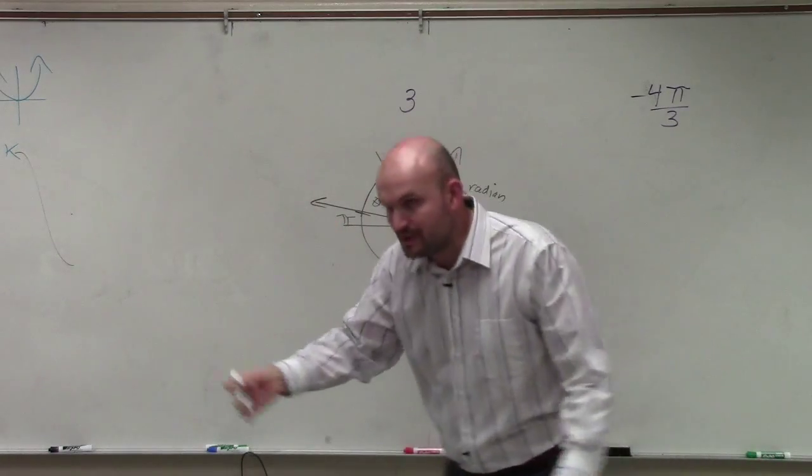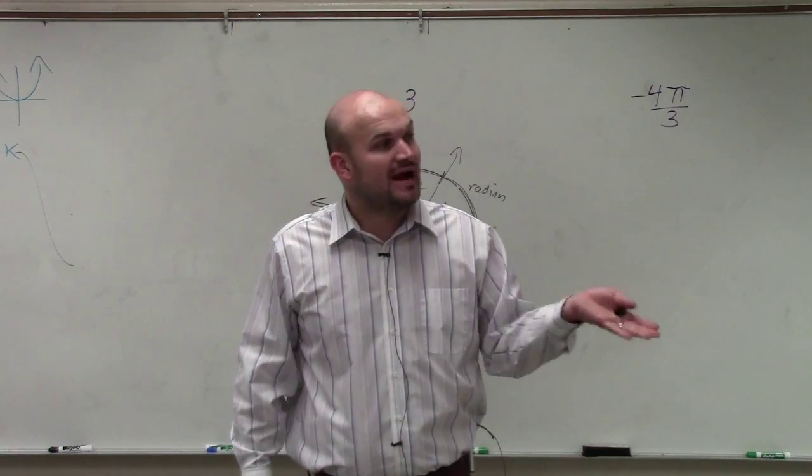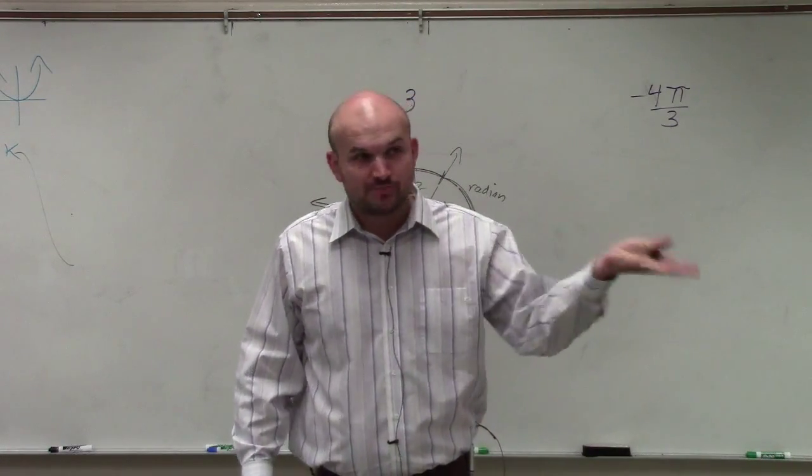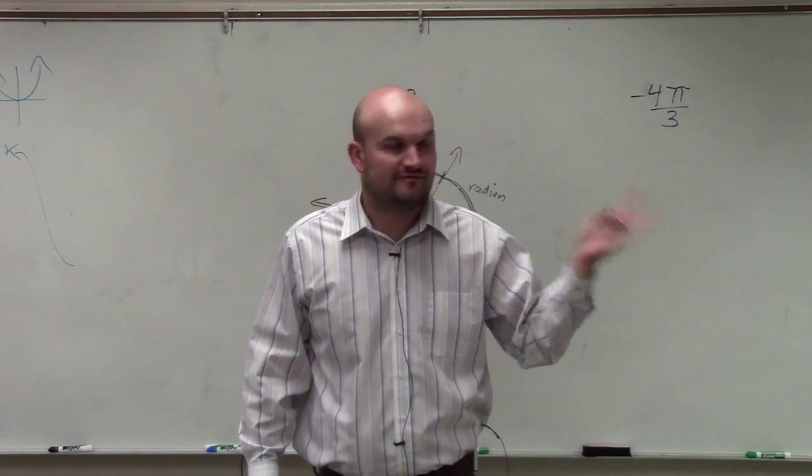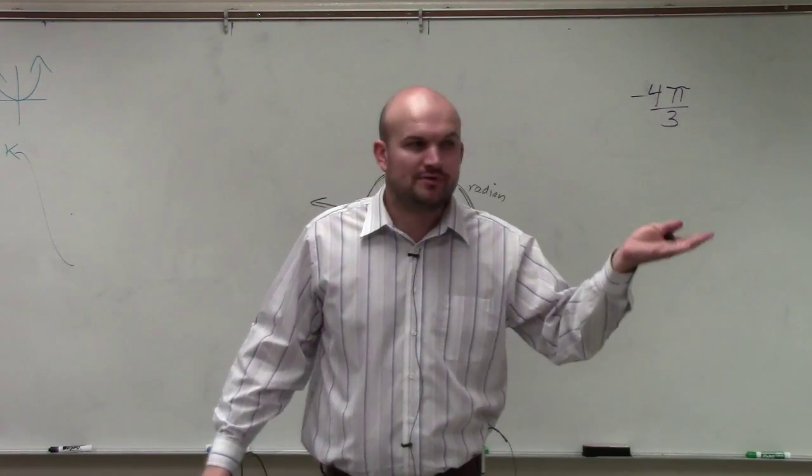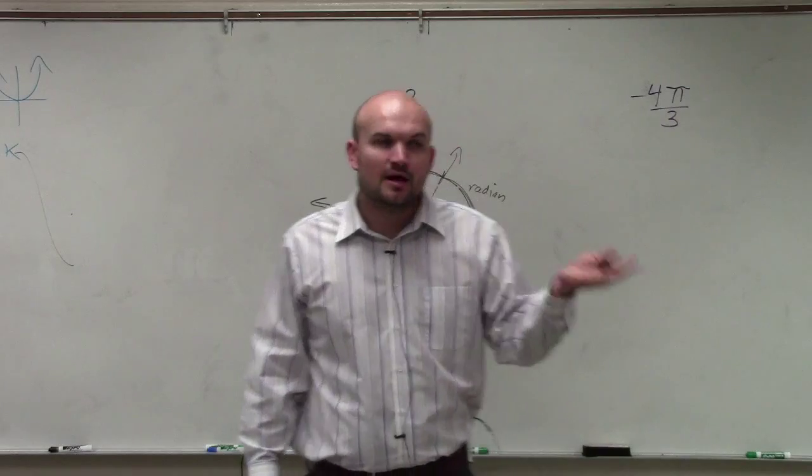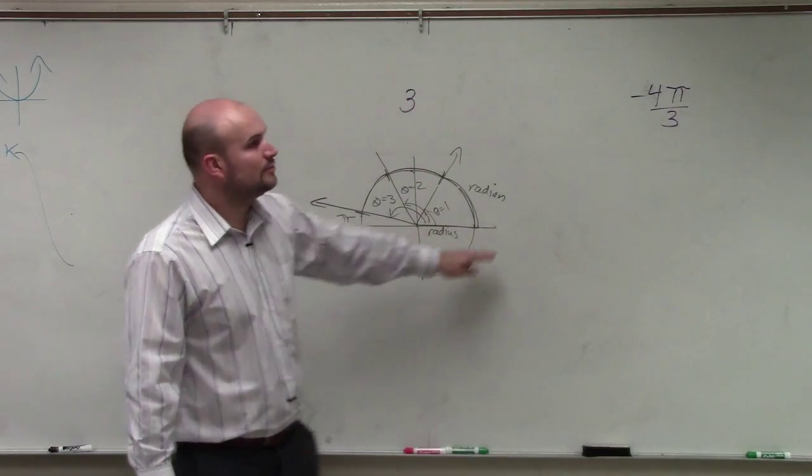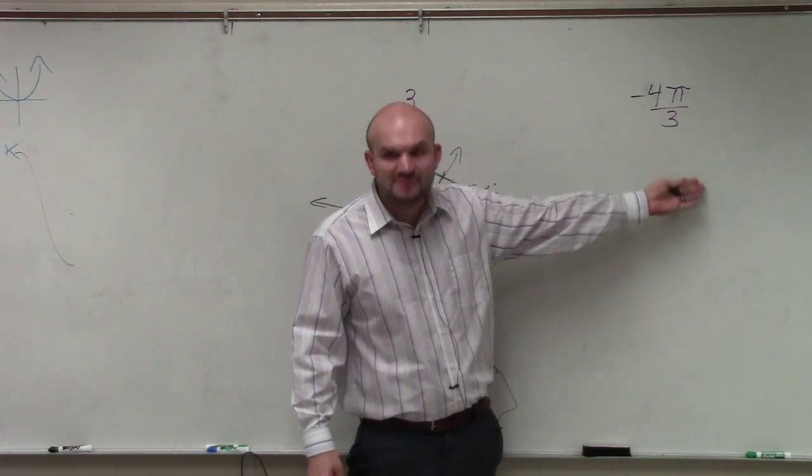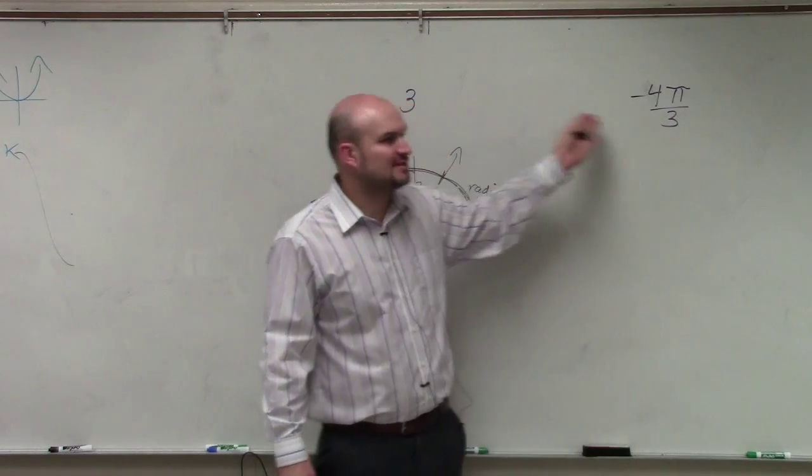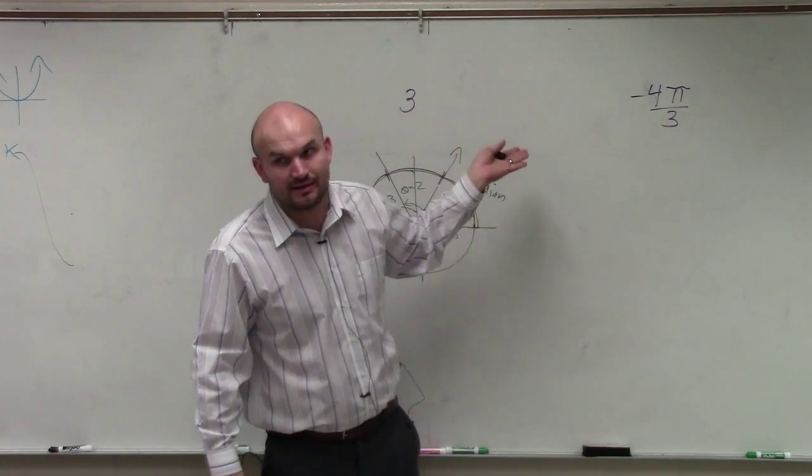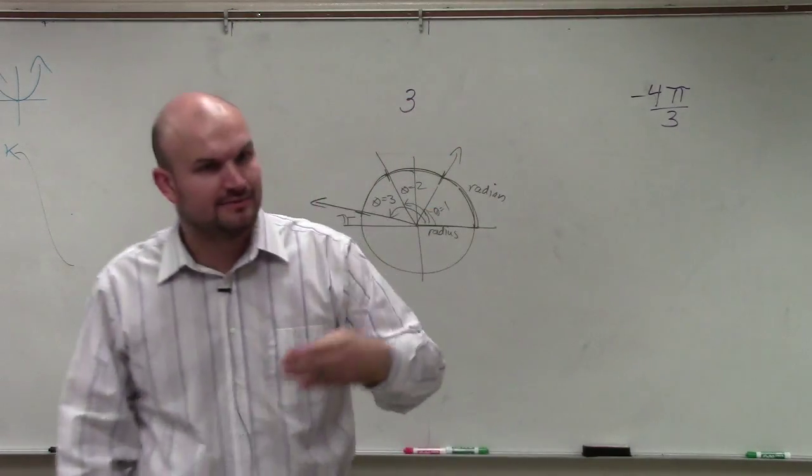That's where pi comes from. So sometimes we're going to be graphing or using radians as just pure numbers, as just a radian, 5, 6, 2.3. Those are all radians. And other times, which is more common, we're going to be using radians in terms of pi, which is a lot easier sometimes than just dealing with the number radian. But it's the same thing, OK?